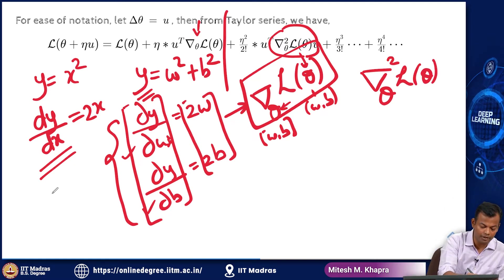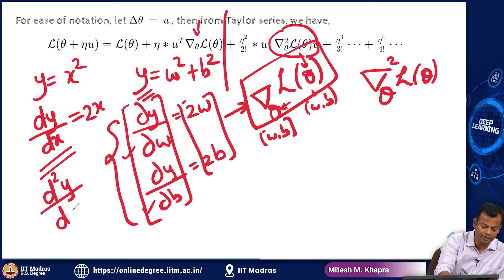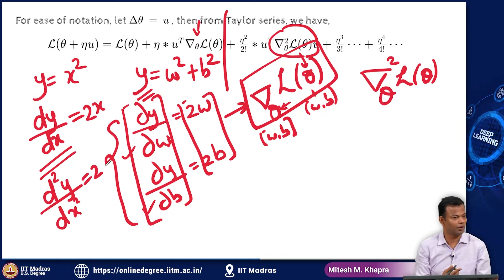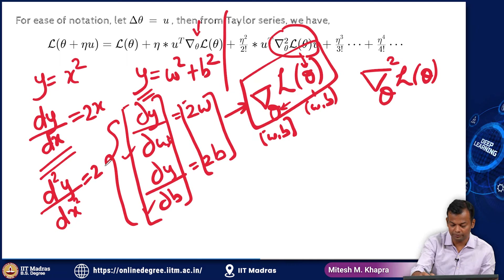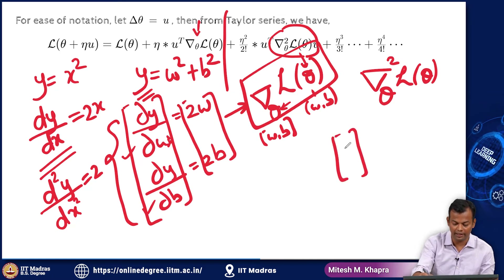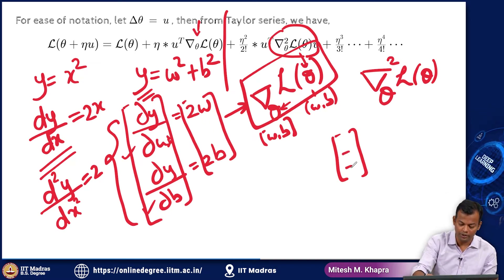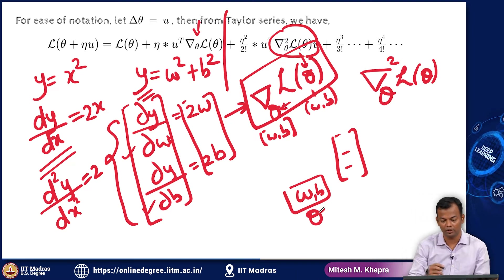Now if I ask you what is the second order derivative — that means I am going to take the first derivative and again take the derivative with respect to x — that is going to be 2. So this is the second order derivative. Now what this is, is the gradient of the gradient. So this is what your gradient looks like — a vector containing the partial derivatives. Now again you are taking the derivative of this vector with respect to your parameters, which is taking the gradient with respect to theta.